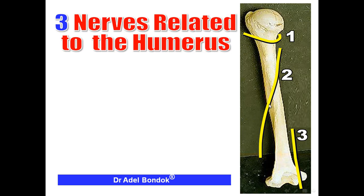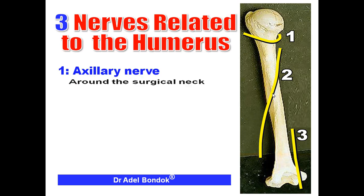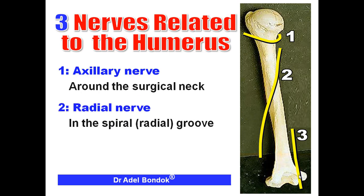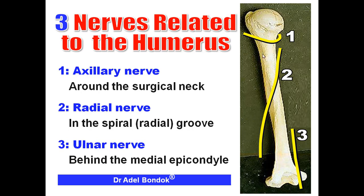Regarding the nerves related to the humerus — very important for neurosurgery, neurology, and orthopedics — there are three nerves. The first is the axillary nerve, related to the surgical neck. The second is the radial nerve, related to the spiral groove. The third is the ulnar nerve, related to the back of the medial epicondyle.